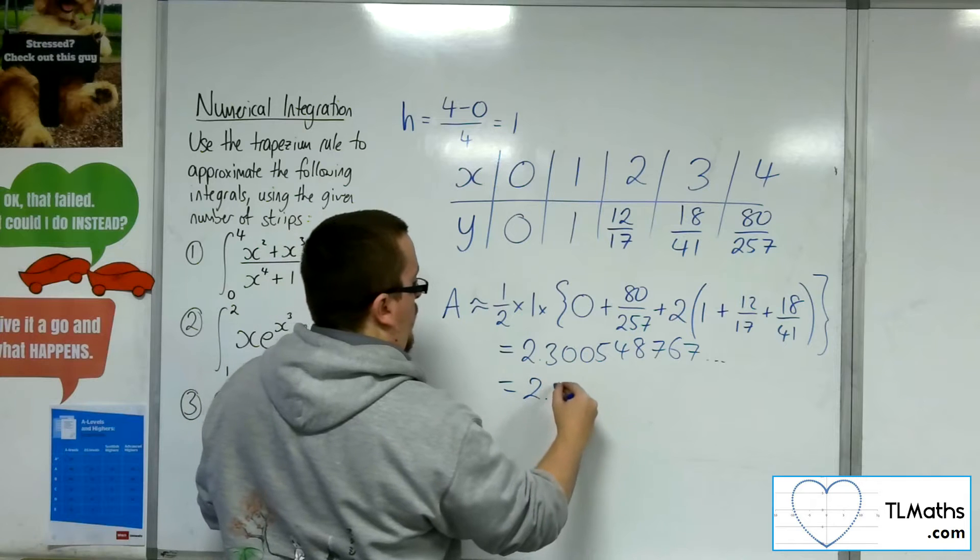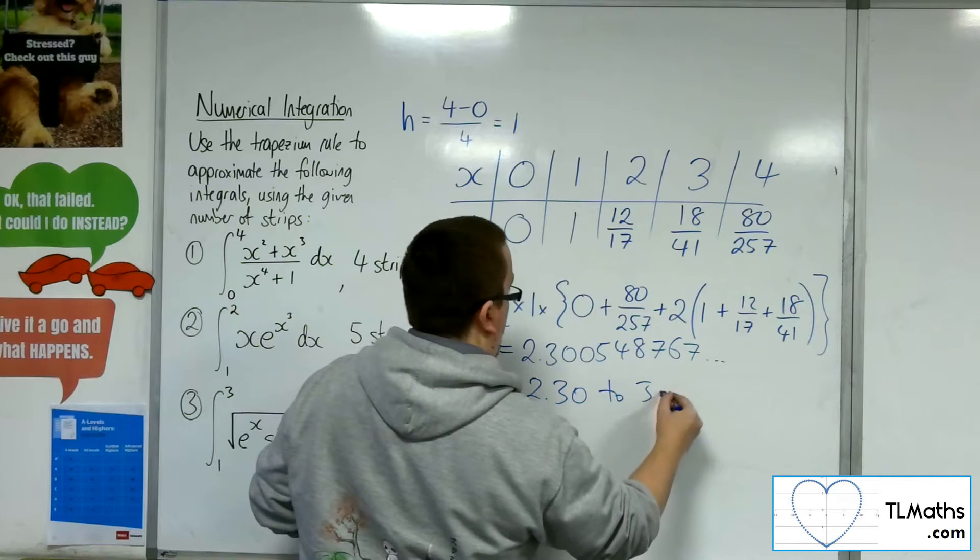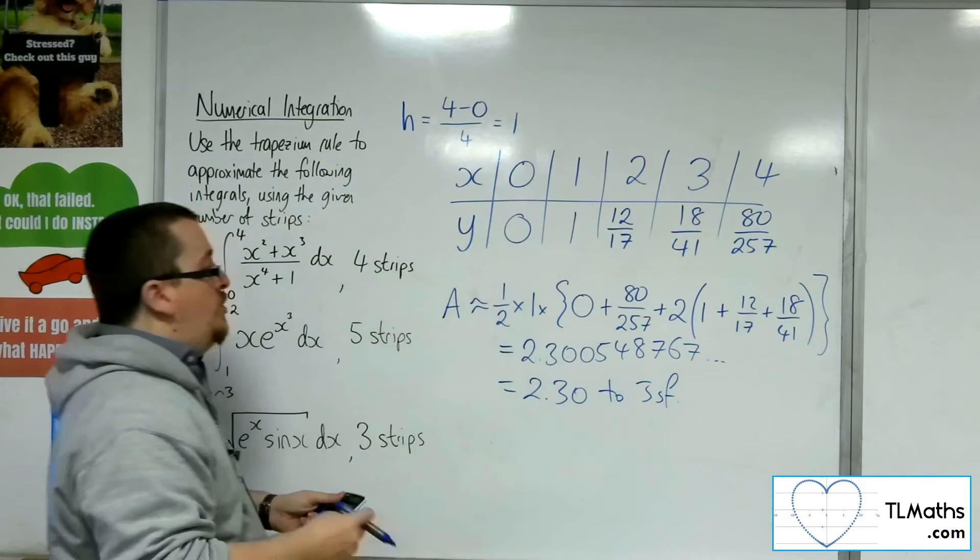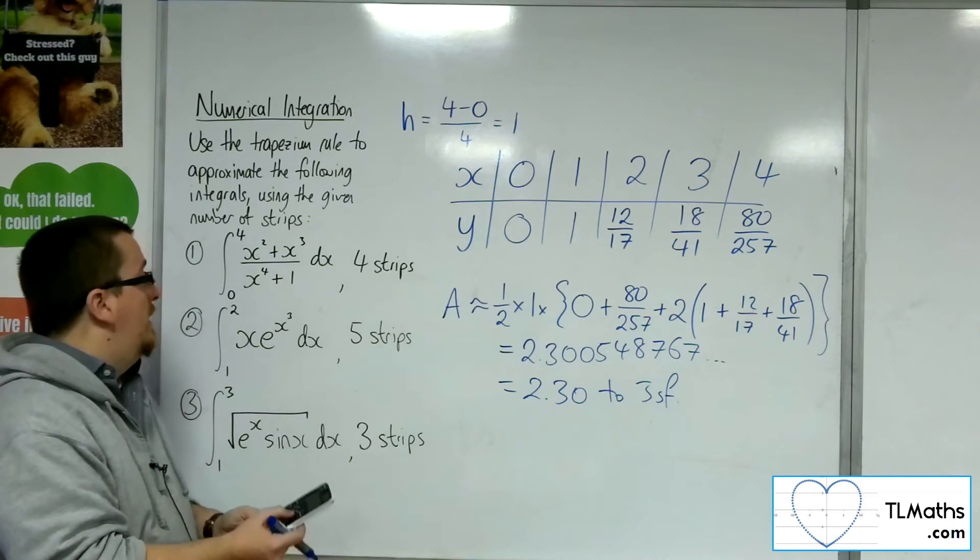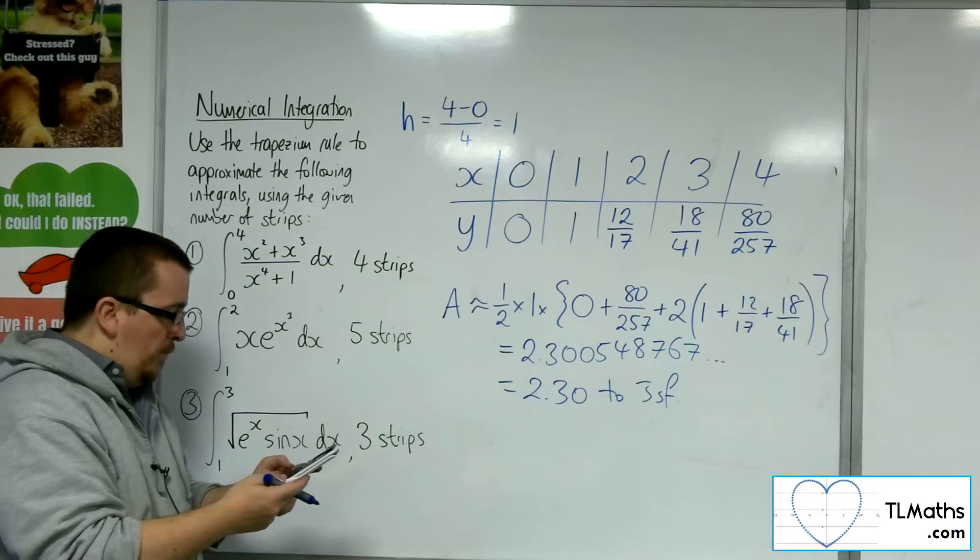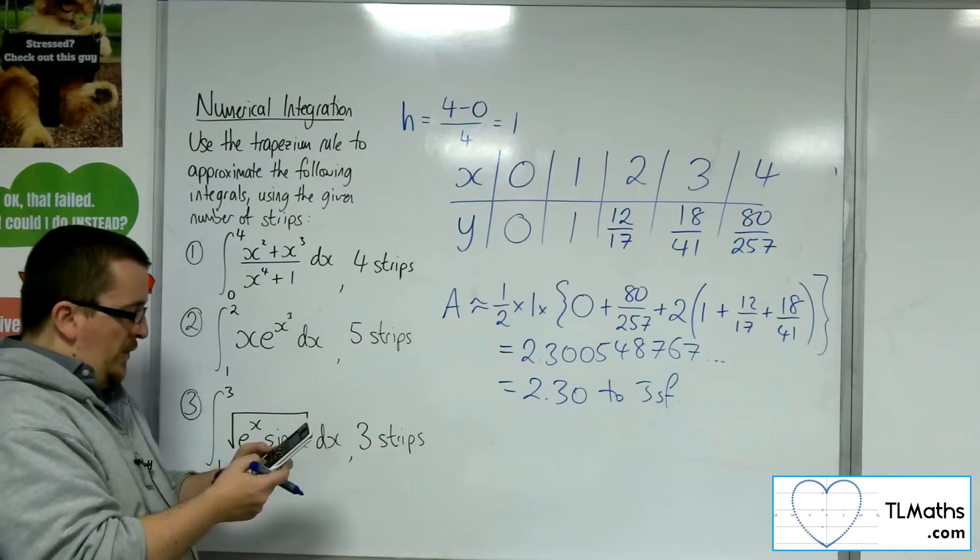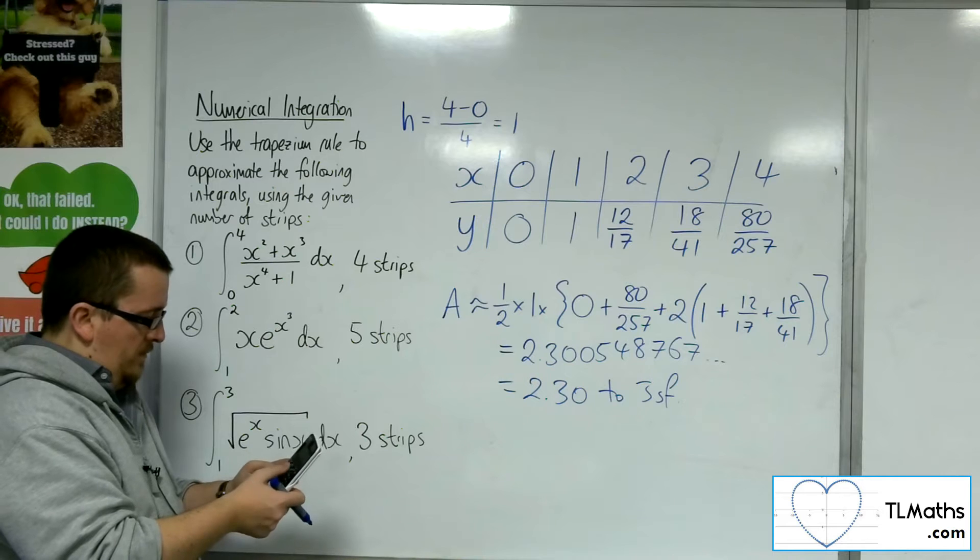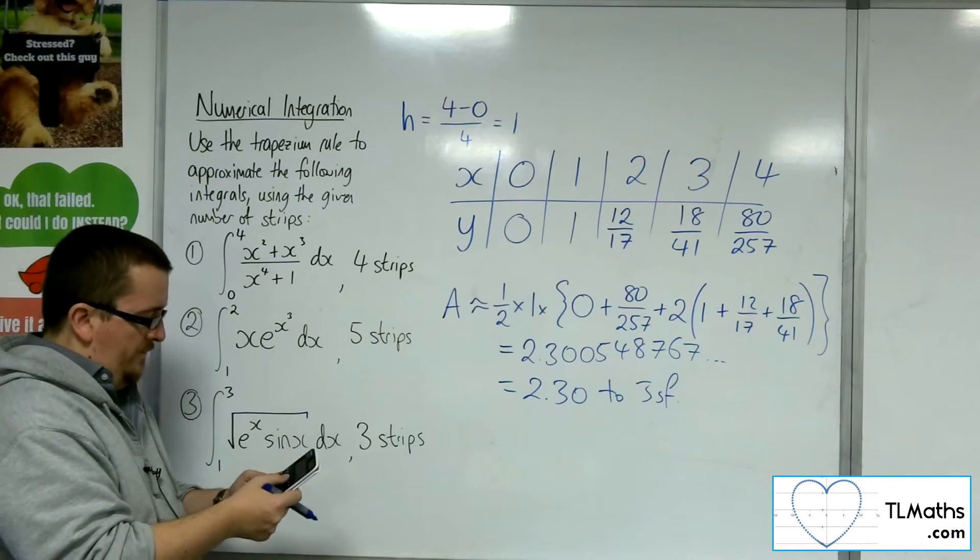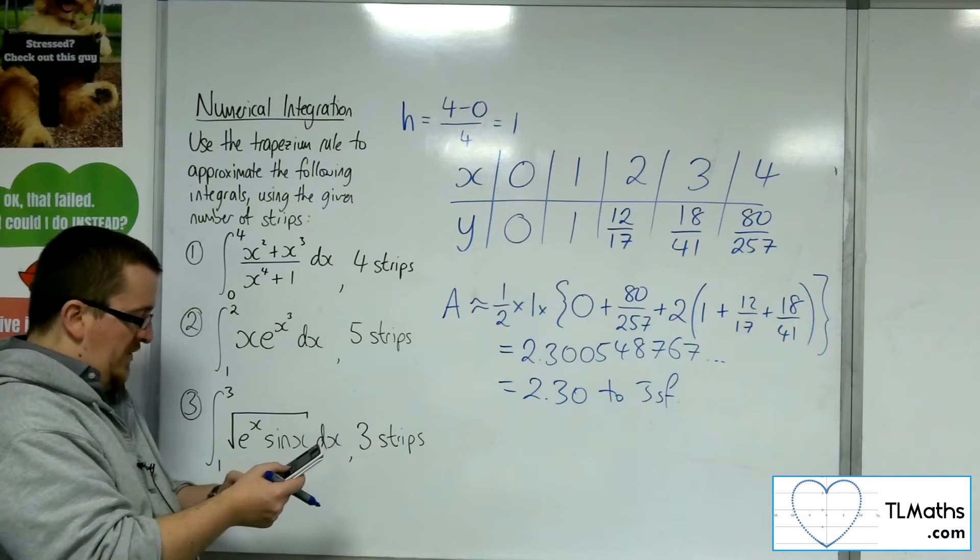So we get 2.300548767. So that's 2.30 to 3 sig fig. Once you've got your result, check on your calculator using your integral button that you've got something that is appropriate. So we've got x squared plus x cubed over x to the four plus one. Evaluated between zero and four.